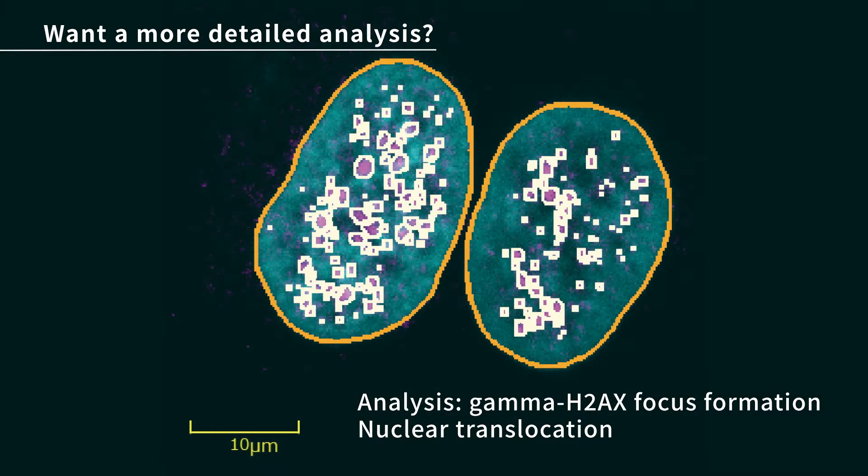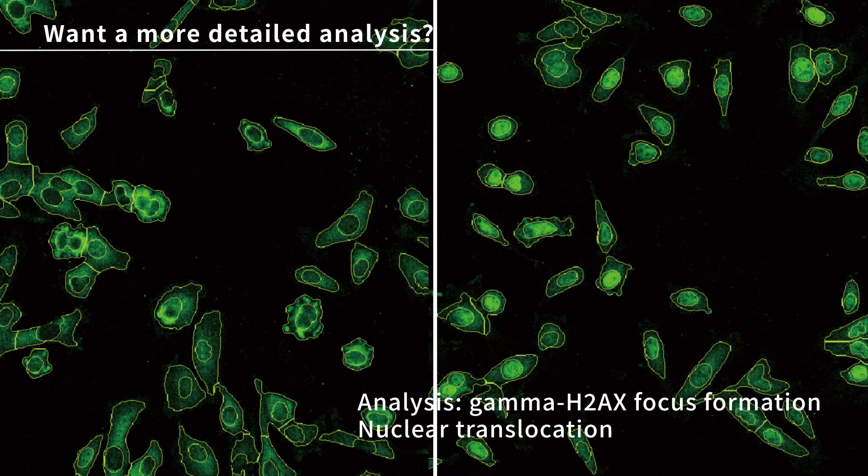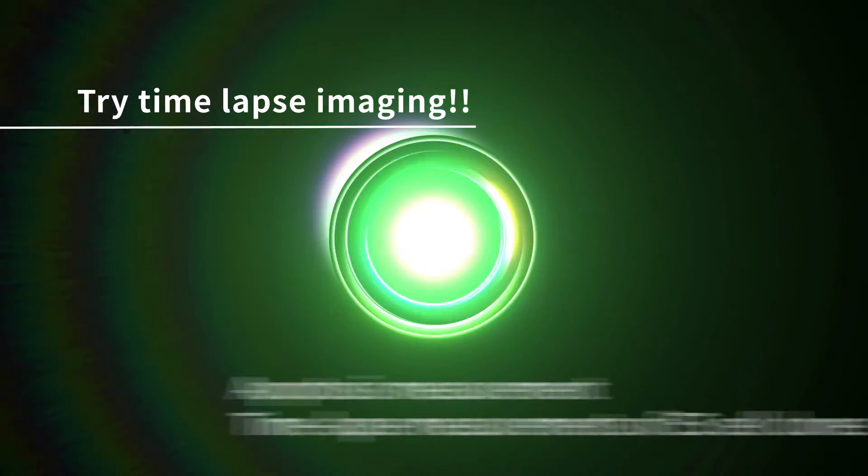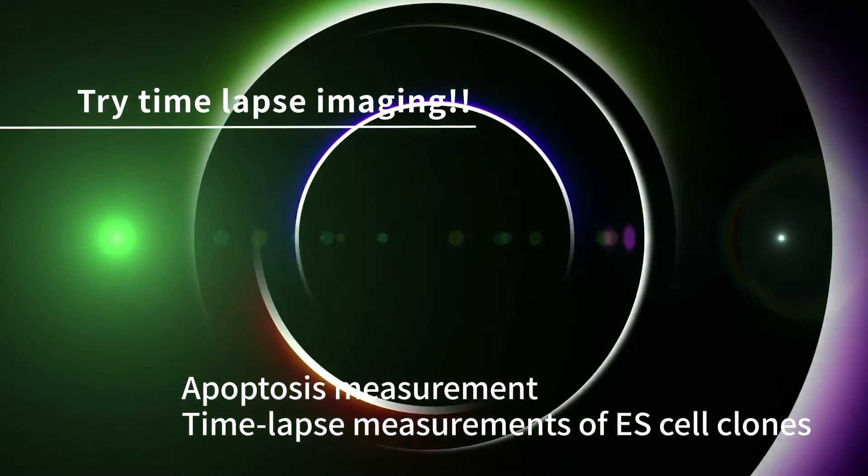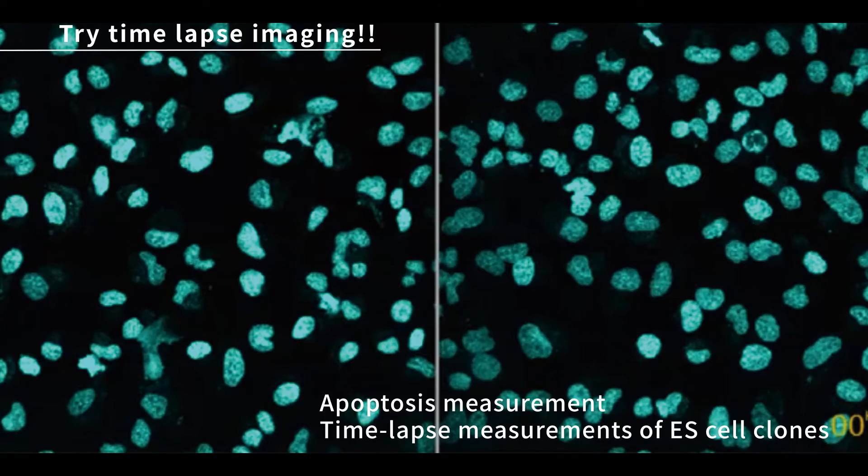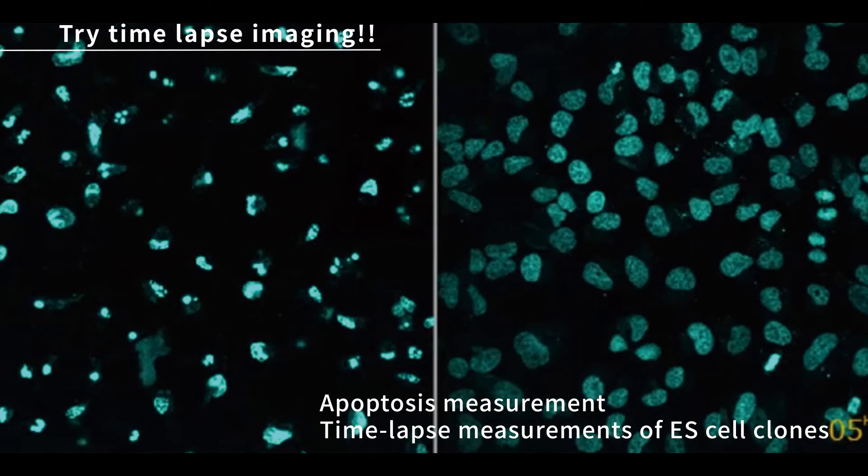Cell Voyager CQ1 can be integrated with other cell culture equipment and plate transfer robots to build a complete imaging system that automates the entire process from culture to imaging and analysis.